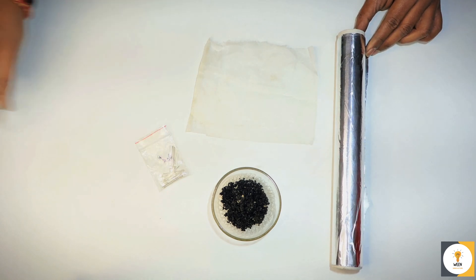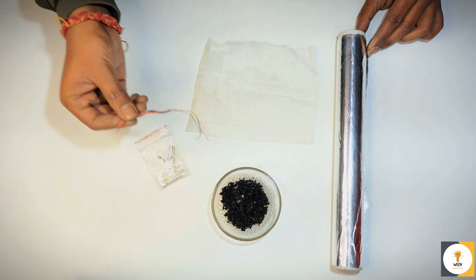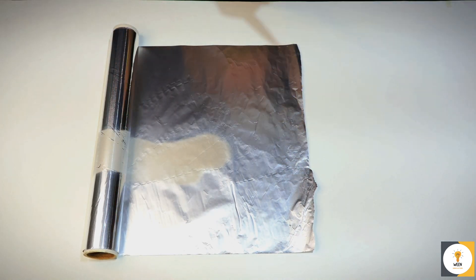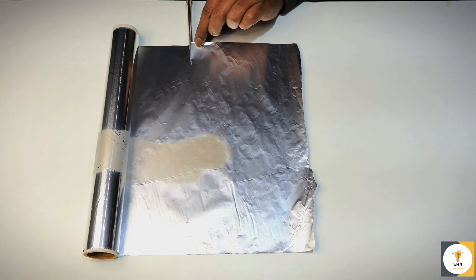LED light to test the battery and wires. First, let's prepare the aluminum sheet. Cut it and fold it into a rectangular shape.